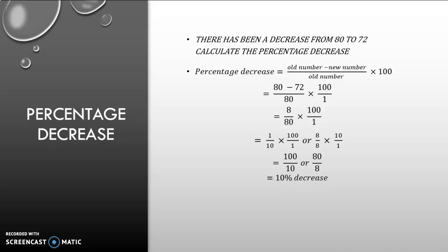If we look at an example for percentage decrease, there has been a decrease from 80 to 72. Calculate the percentage decrease. So the value declined. I take my old number, the 80, subtract my new number, the 72, and I divide it by my old number, the 80. And I multiply with 100%, which can be written as 100 over 1. I replaced it into my formula. 80 subtracting 72 will give me 8 over 80, times 100 over 1.